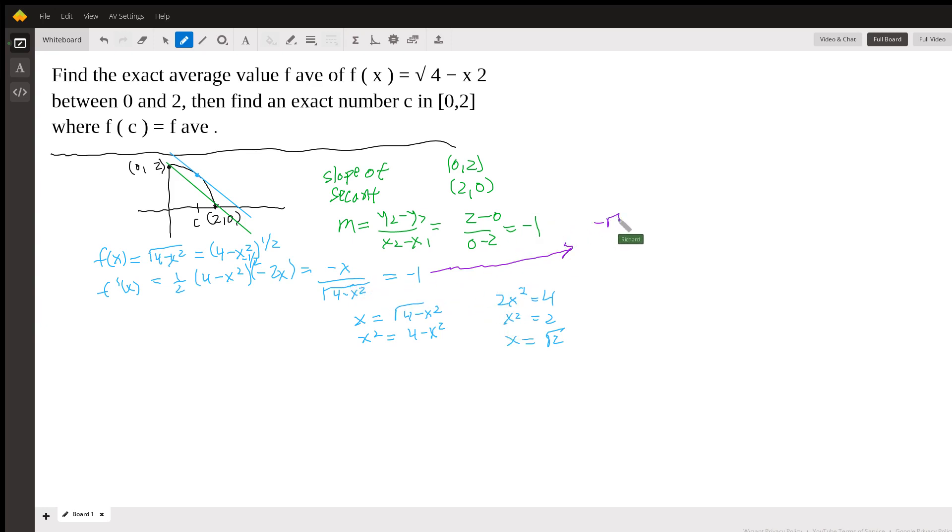So, it's negative root 2 over square root 4 minus, well, square root of 2 squared is 2. So, it's negative root 2 over root 2. So, in fact, the slope of the tangent line when x is equal to root 2 is negative 1. So, it's nice to see that. So, we proved that this slope of the blue line is negative 1. We already found that the slope of the green line is negative 1. And that's it.